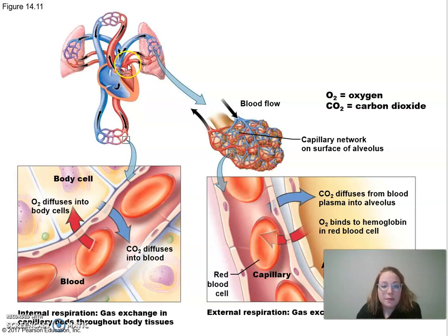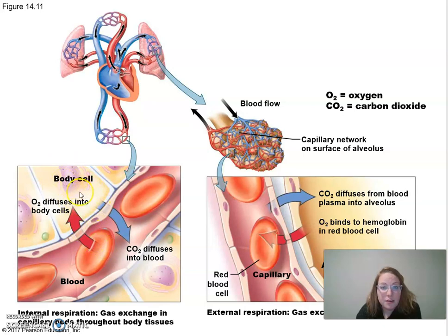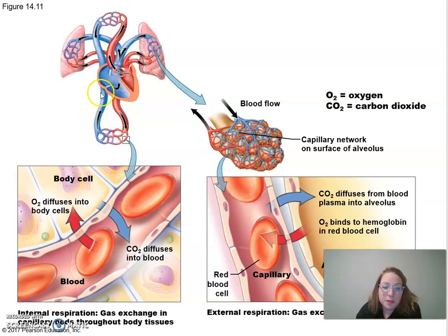Blood enters the left atrium, through the bicuspid or mitral valve, into the left ventricle, through the aortic semilunar valve, into the aorta which branches to the abdominal aorta and carotids. At the systemic capillaries, oxygen is dropped off for the tissues — that's internal respiration. Tissues use oxygen to make ATP through cellular respiration, producing carbon dioxide as a byproduct. Blood returns through the superior and inferior vena cavae and the coronary sinus into the right atrium.